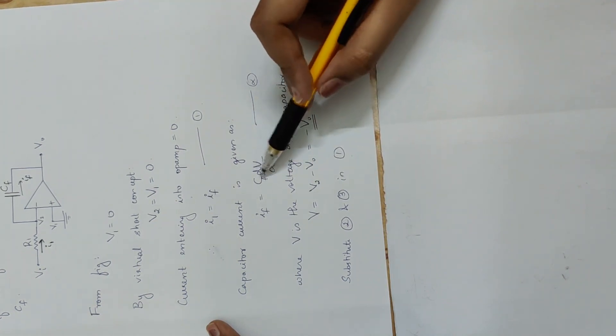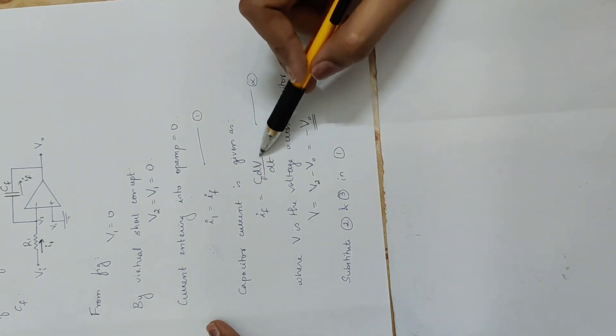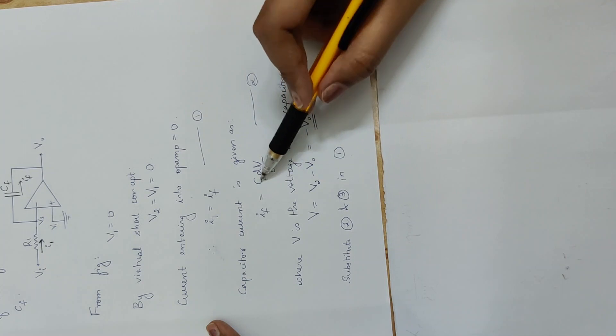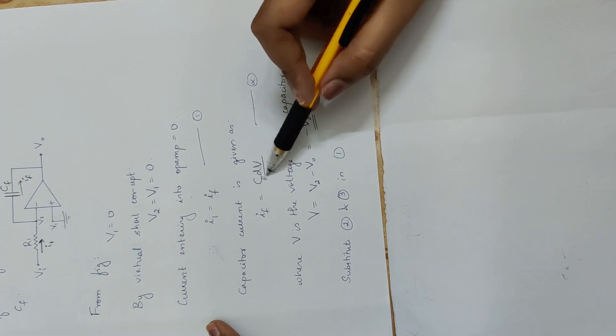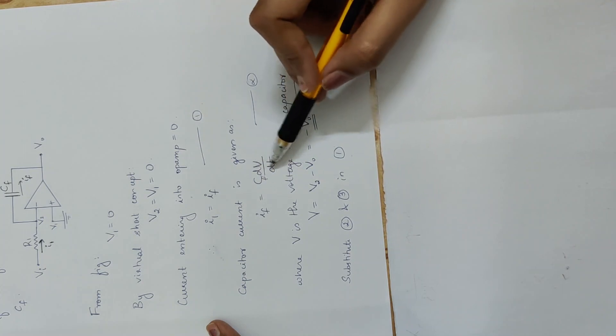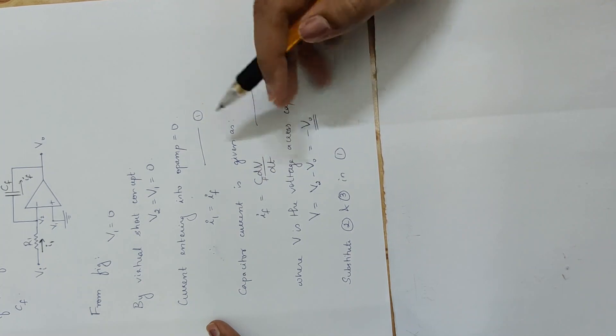Therefore, the capacitor current IF is equal to minus CF into dVO by dt.